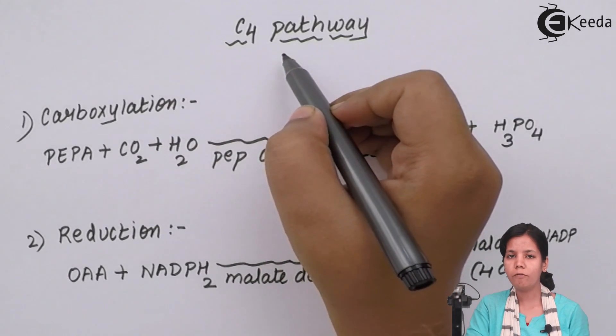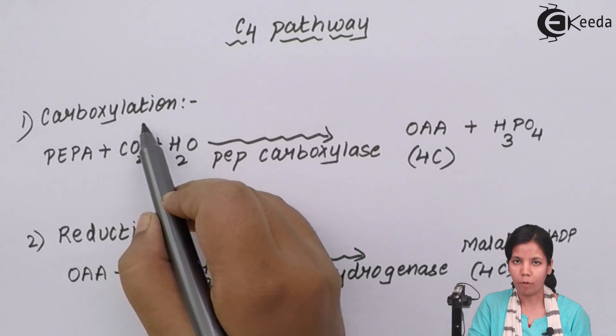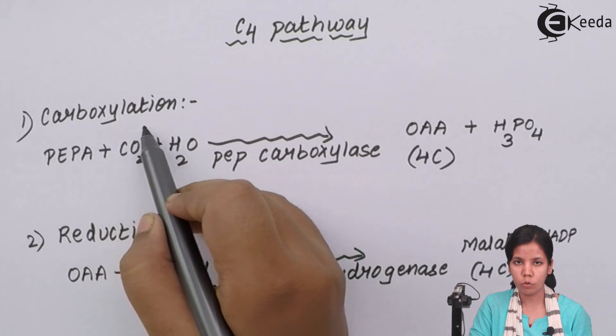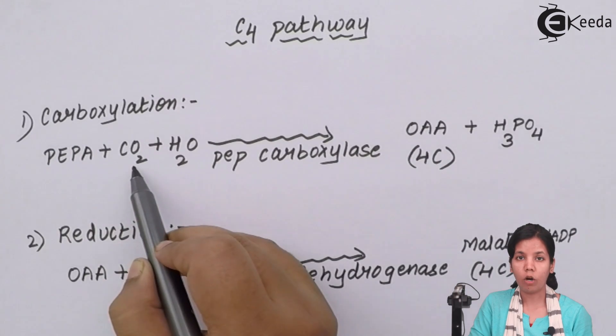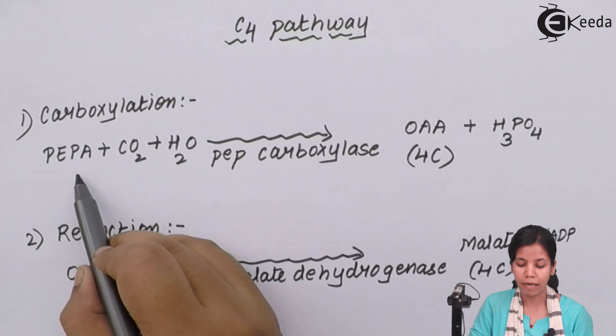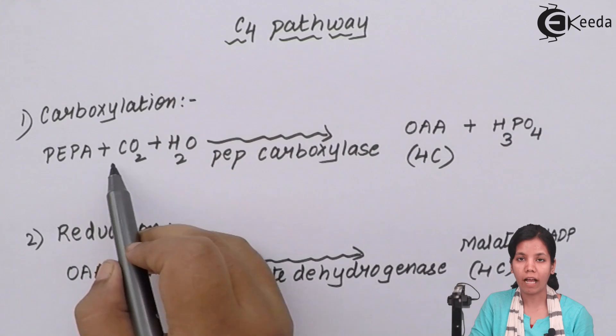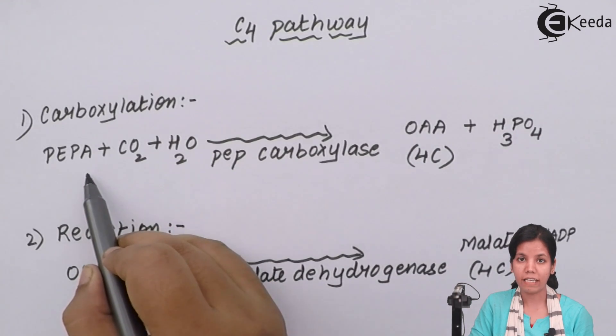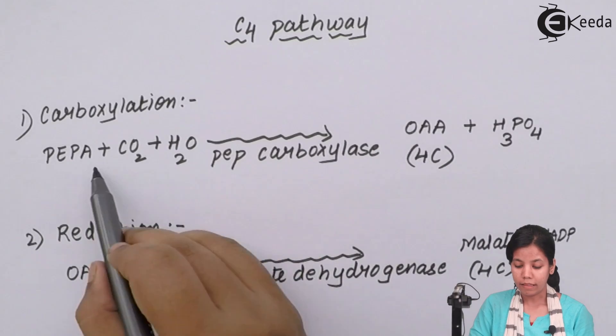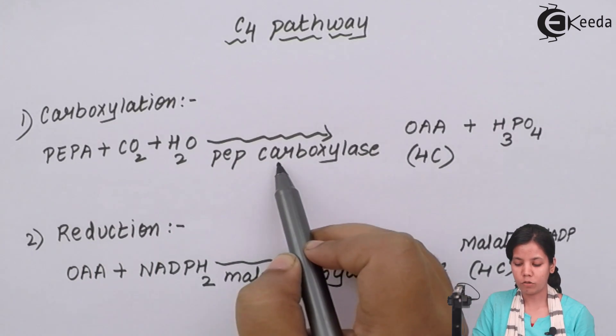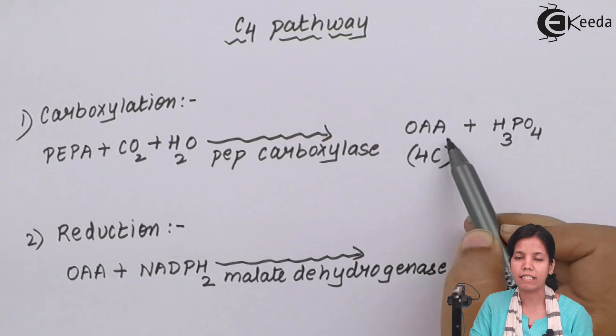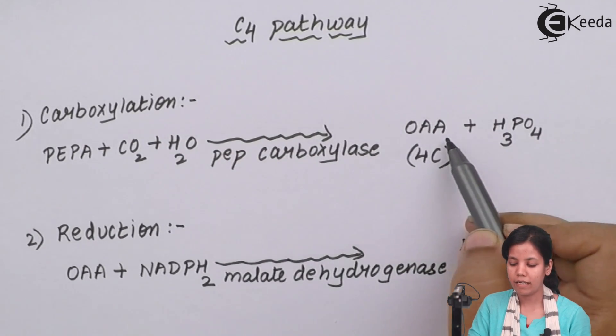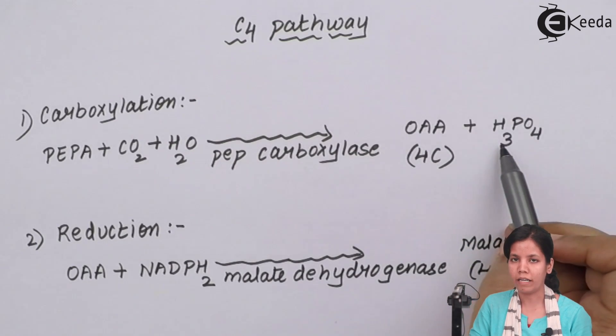C4 pathway - now C4 pathway works in three steps. The first step is carboxylation, that is fixation or usage of CO2. During carboxylation, carbon dioxide which is emitted out or which is present in a lot of quantities in the atmosphere is accepted by PEPA, that is phosphoenol pyruvic acid, and this PEPA has more affinity for carbon dioxide. It can accept carbon dioxide even in 50 ppm. Along with water molecule in the presence of enzyme phosphoenol pyruvate carboxylase, a stable compound is formed which is oxaloacetic acid, and this oxaloacetic acid is a four carbon compound. Along with that H3PO4- is formed.